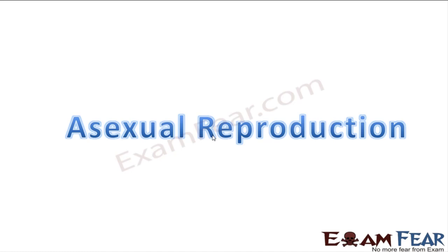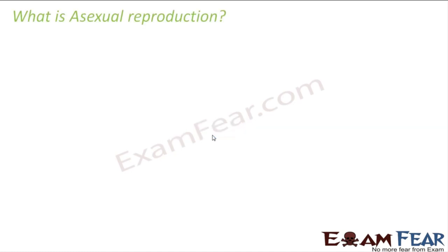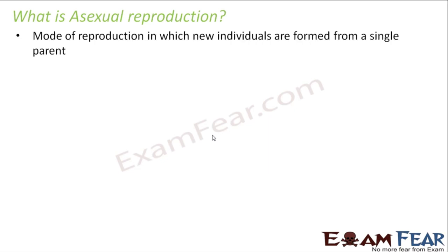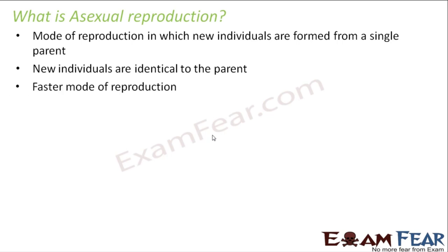We will now discuss asexual reproduction in detail. Asexual reproduction is a mode of reproduction in which new individuals are formed from a single parent. The new individuals are identical to the parent because there is no scope for variation — no new characters are observed in the new organism. It is a faster mode of reproduction, happening very quickly.